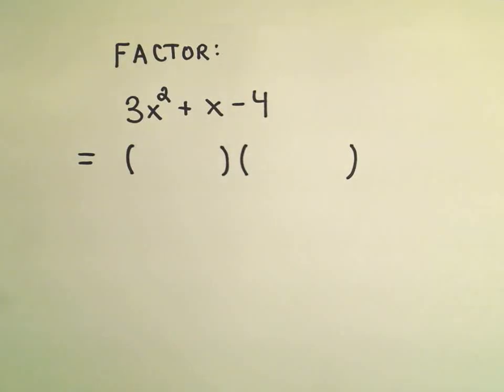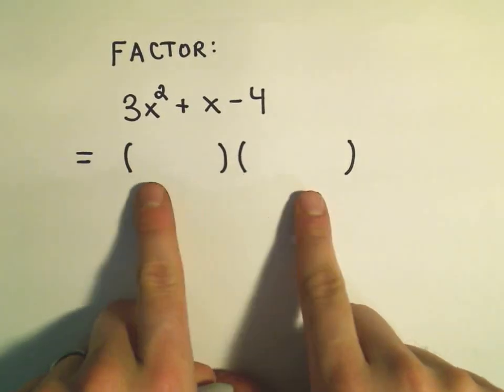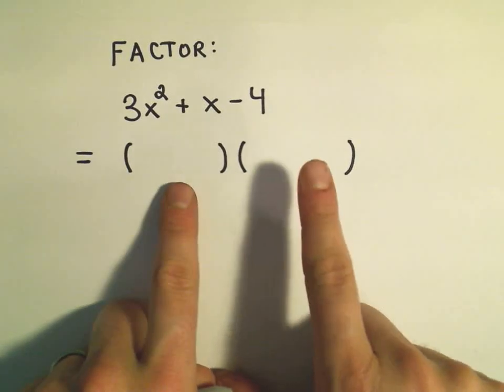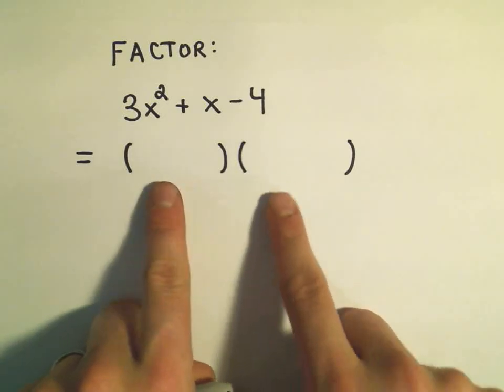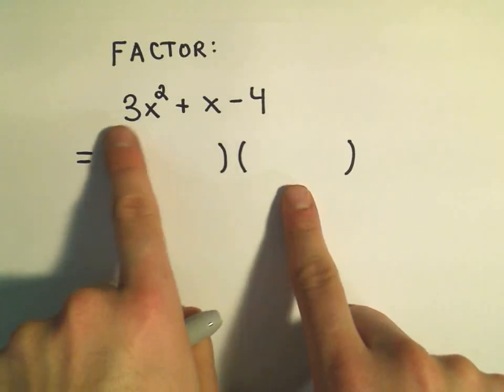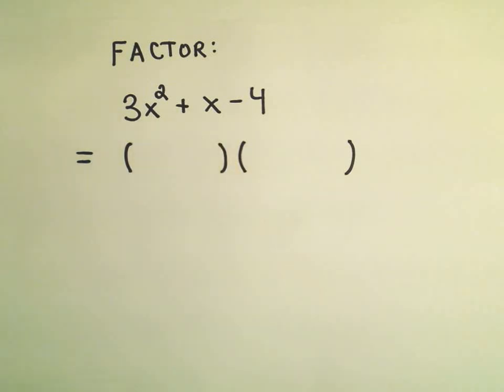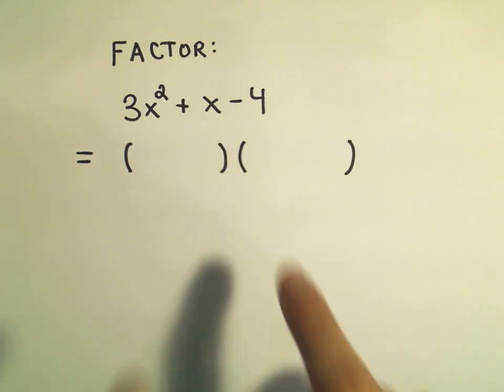Okay, so what I'm going to do is I'm going to make two sets of parentheses. I'm going to put two terms in each set of parentheses. When I distribute everything out, I want to get this 3x squared plus x minus 4. I want to get that back.